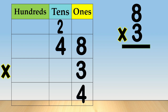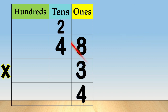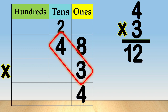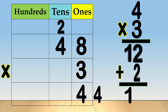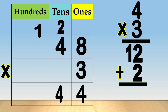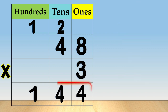Carry two tens to the tens column. Then, multiply the digit in the tens place. Four times three is equal to twelve tens. Then add the two tens that you have carried over. Twelve plus two is equal to fourteen tens. Now, regroup fourteen tens as one hundred plus four tens. We write four in the tens column and carry one to the hundreds column, then bring down one in the hundreds column. So, forty-eight times three is equal to one hundred forty-four.